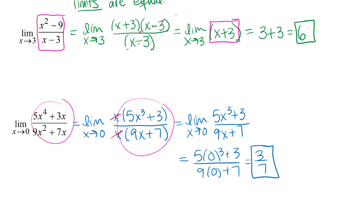A couple things to emphasize about notation in both examples: we start with a limit at the beginning of the problem and I keep writing those LIM symbols in front while I'm doing the algebra. It's incorrect if you don't write those there. Notice that by the end, once I'm ready to use the substitution shortcut theorem, I stop writing LIM because at that step I'm actually evaluating the limit.